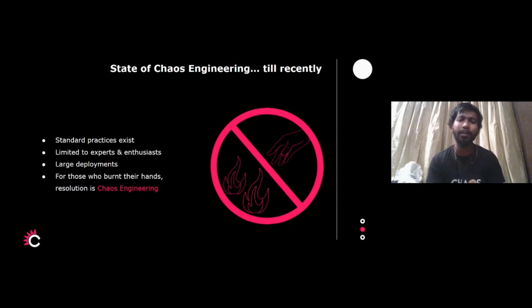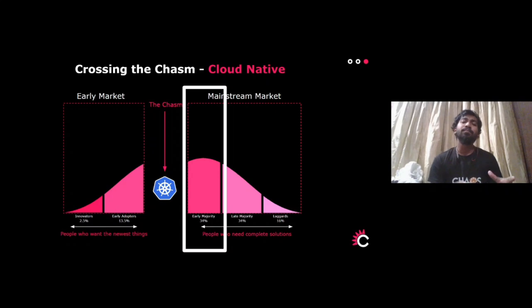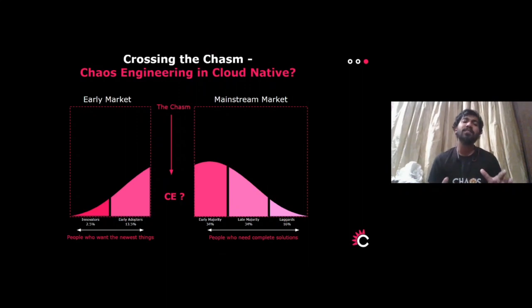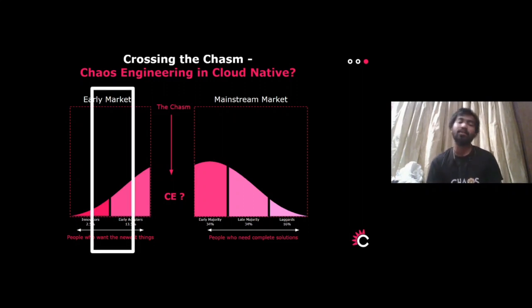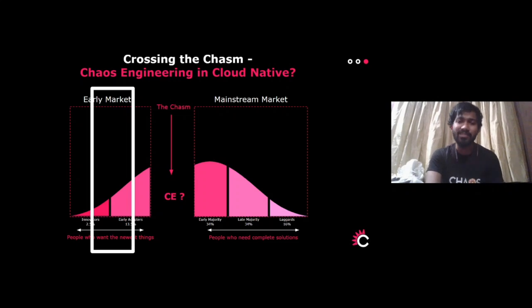Chaos engineering practice can be a resolution for everyone. Moving on — Kubernetes has already crossed the chasm and reached the mainstream market; most people have adopted Kubernetes in some way to build their infrastructure. But chaos engineering? We believe it is yet to cross the chasm. It's still in the early market with early adopters, and there's still a lot to develop so people can adopt chaos. There's also a lot of fear — but undoubtedly you should go ahead adopting chaos engineering for your infrastructure and systems.